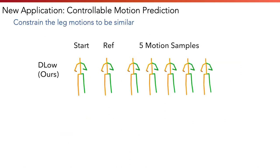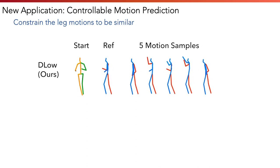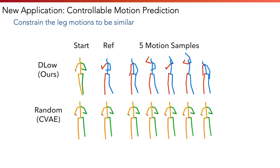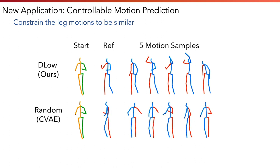Our DLow formulation also enables new applications like controllable motion prediction that constrains the leg motions to be similar across the motion samples.